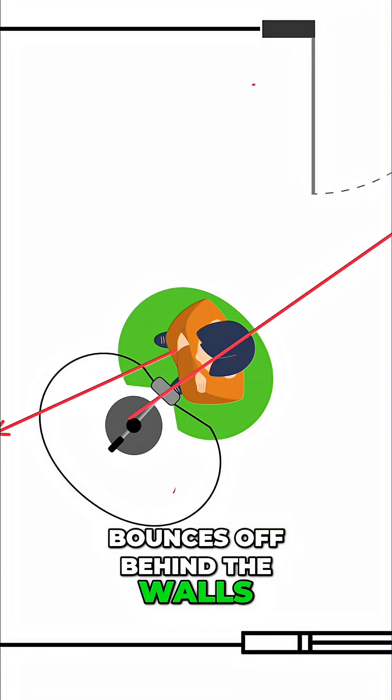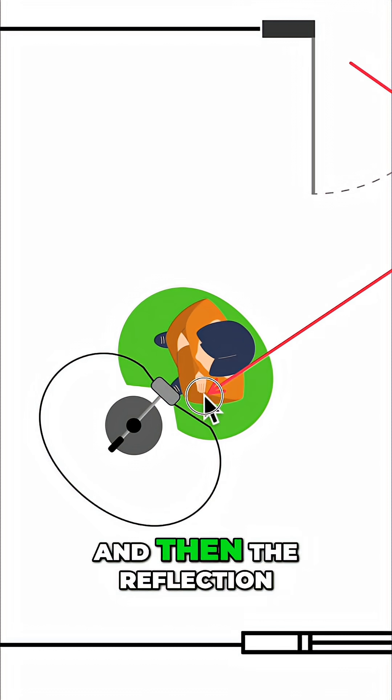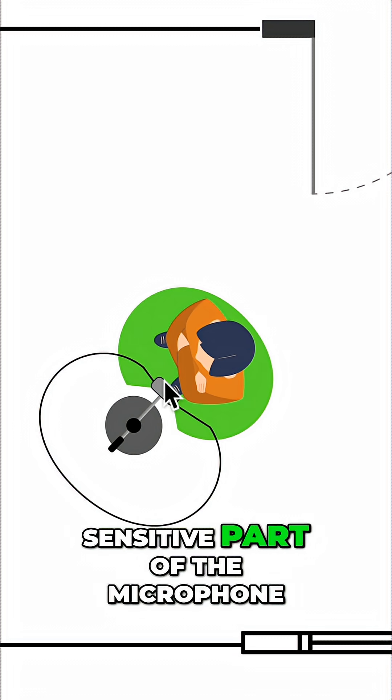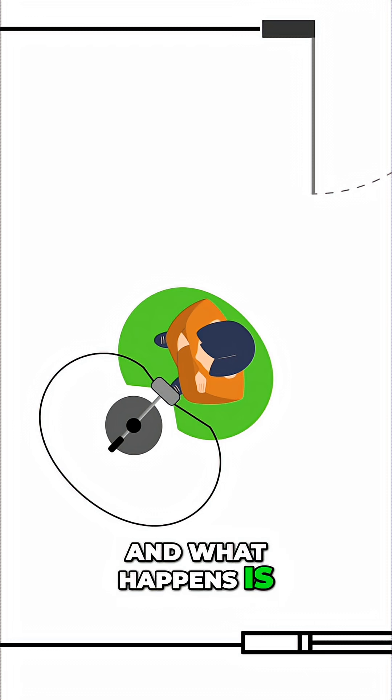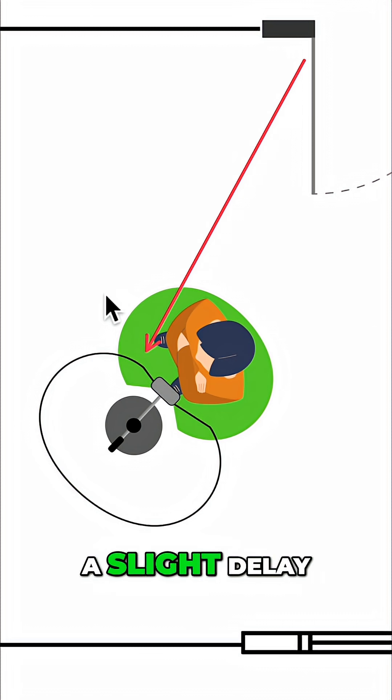It bounces off behind the walls. So it bounces, hits this wall behind here, back, and then the reflection sounds go back and into the microphone. They leak into the sensitive part of the microphone. And what happens is these reflections that are coming back into the microphone are happening at a slight delay.